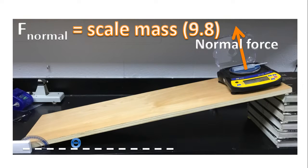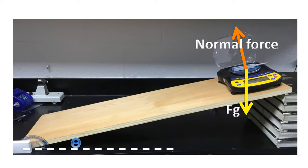To determine the normal force, all we have to do is take the mass as registered by the scale and multiply by 9.8, the acceleration due to gravity. In addition, we have another force acting on the tuning fork. In this case, it's the force of gravity.